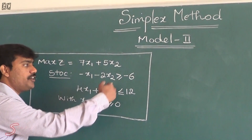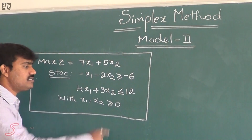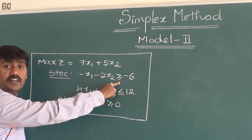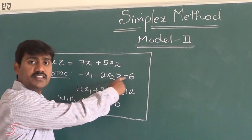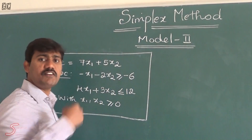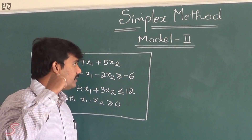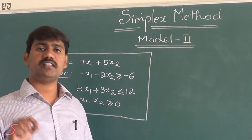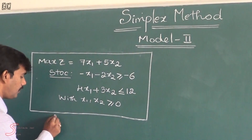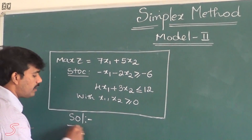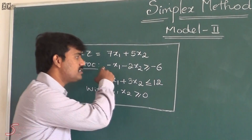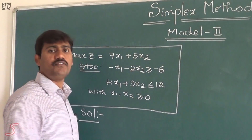After that, we are going to check the subject constraints. Since the second constraint is in the form of less than or equal to type, no problem. Whereas the first constraint is in the form of greater than or equal to type with a minus. So first we have to change this greater than or equal to type into the form of less than or equal to. The most important thing for the simplex method is all the constraints should be in the form of less than or equal to type.